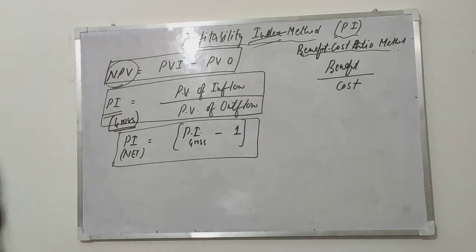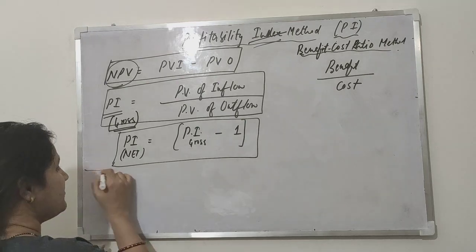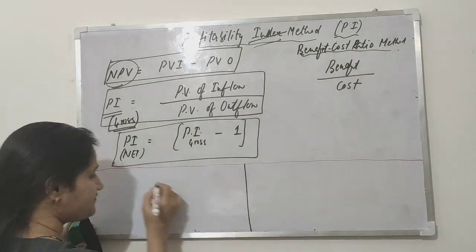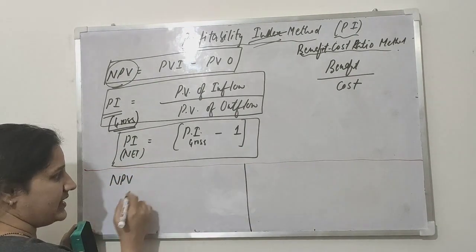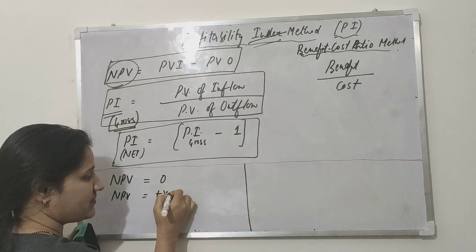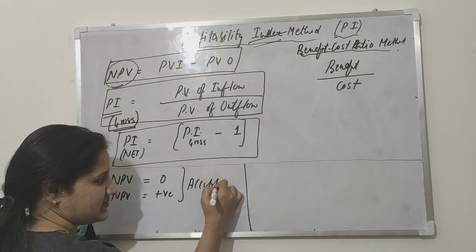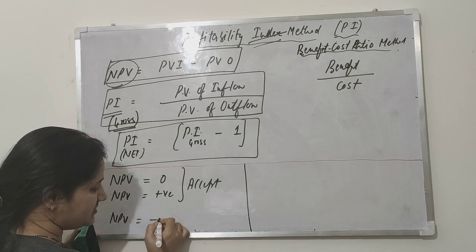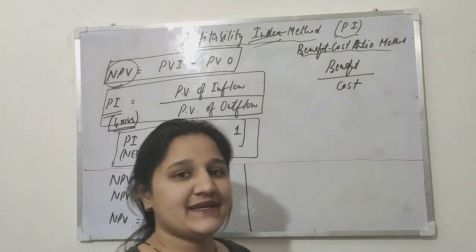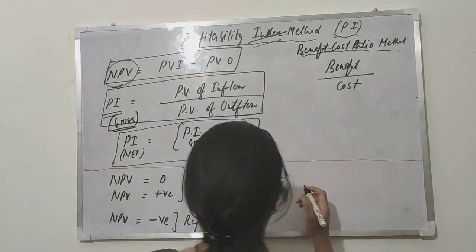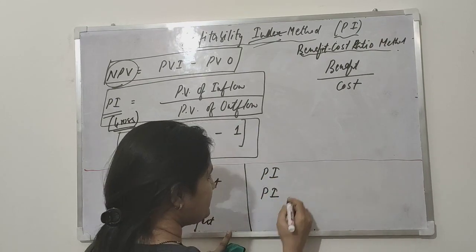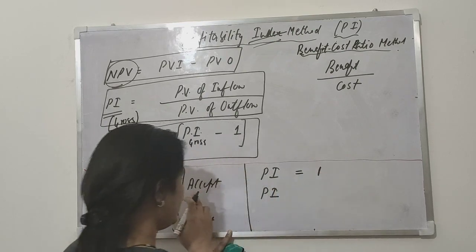Similarly, we will see NPV and its acceptance criteria. What we were doing in NPV - if NPV is equal to zero or if NPV comes positive, we accept the project. When NPV becomes negative, we reject the project. Similarly, in PI, the index that is rupee one.